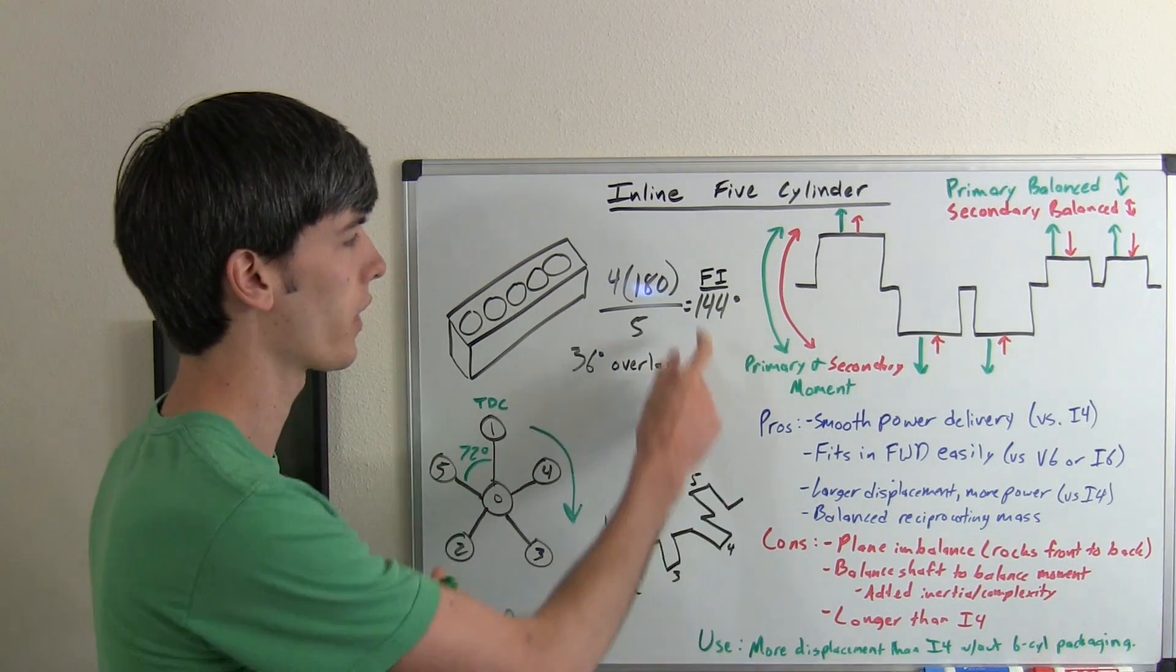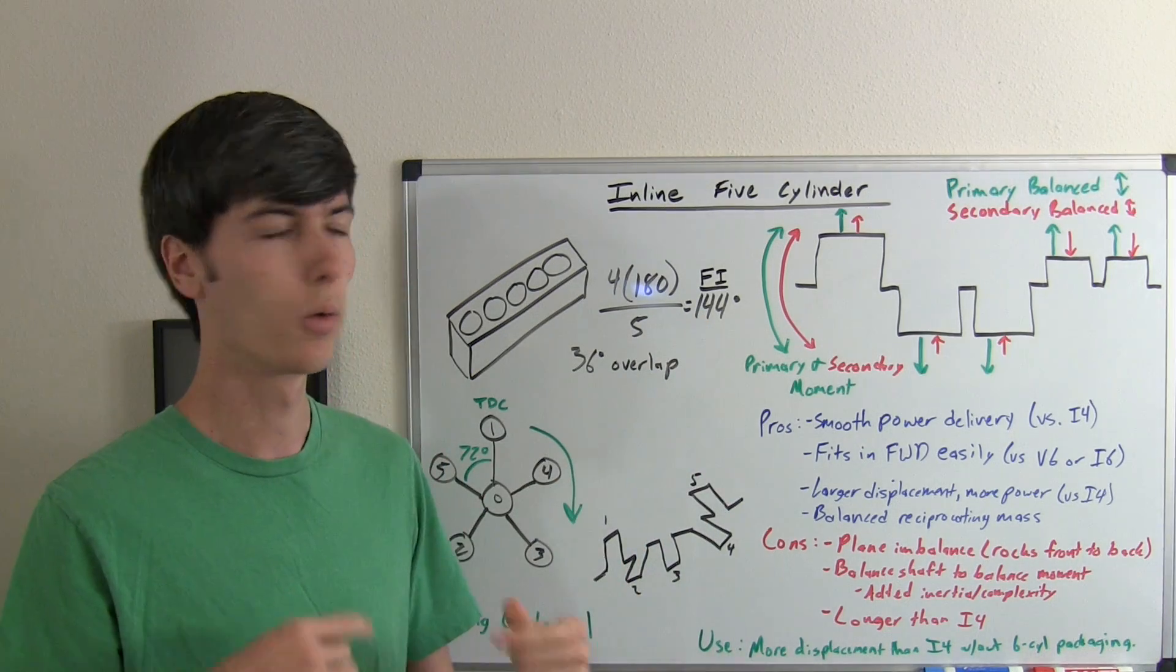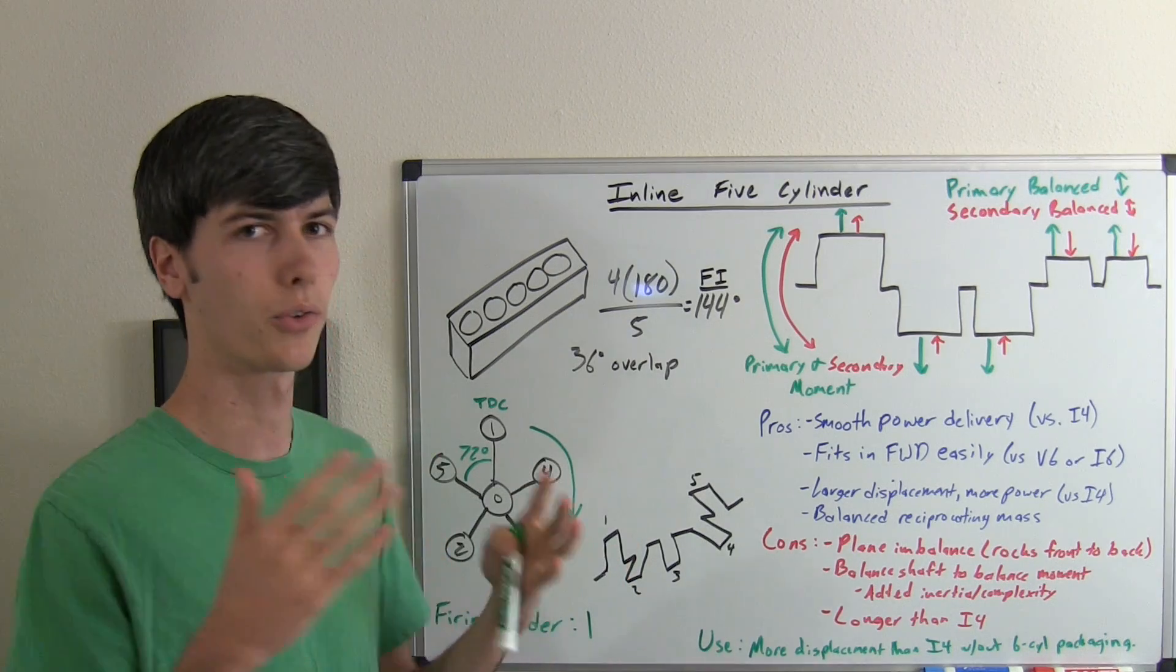For a four-stroke engine, the firing interval is going to be 180 degrees, which means that there's always going to be a power stroke occurring, but there's no overlap.